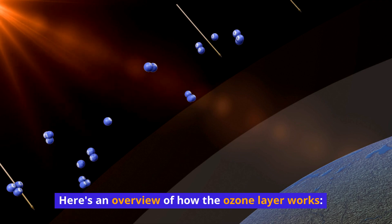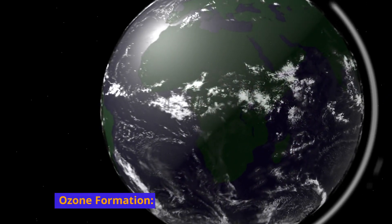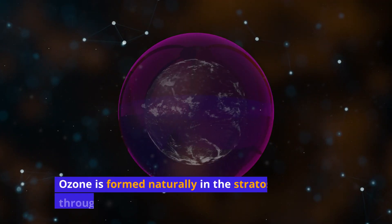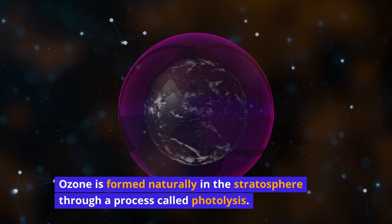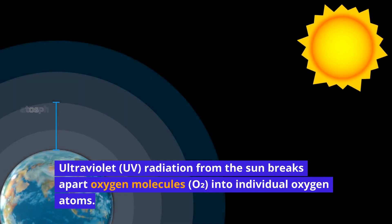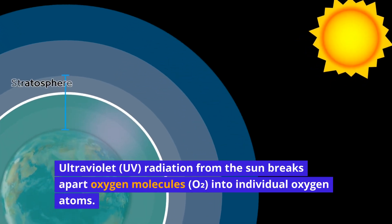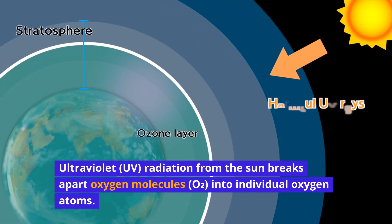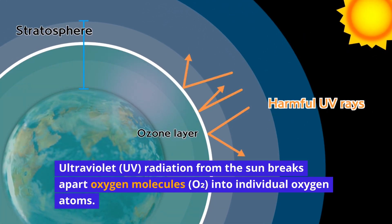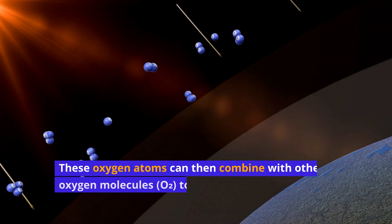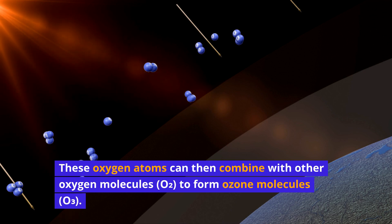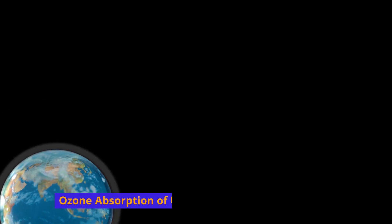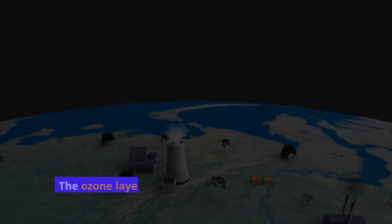Ozone is formed naturally in the stratosphere through a process called photolysis. Ultraviolet (UV) radiation from the sun breaks apart oxygen molecules (O2) into individual oxygen atoms. These oxygen atoms can then combine with other oxygen molecules (O2) to form ozone molecules (O3).